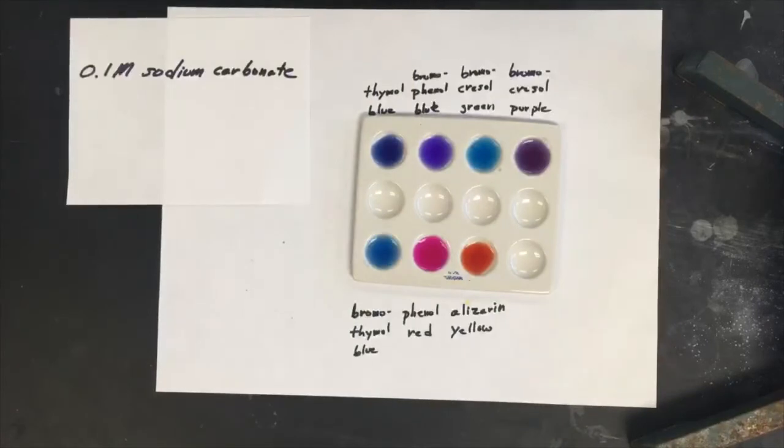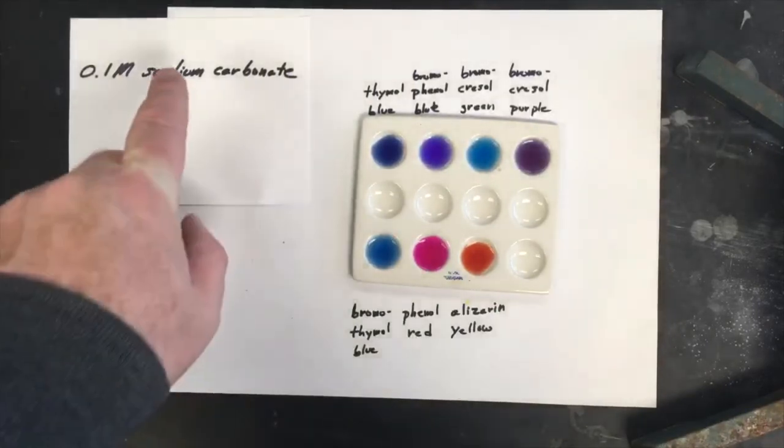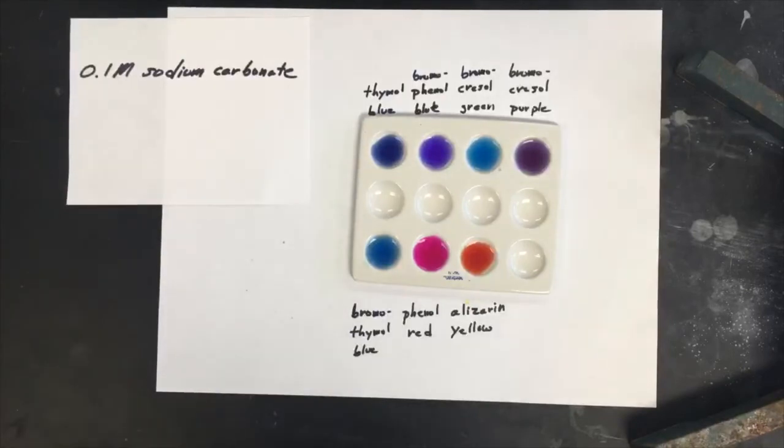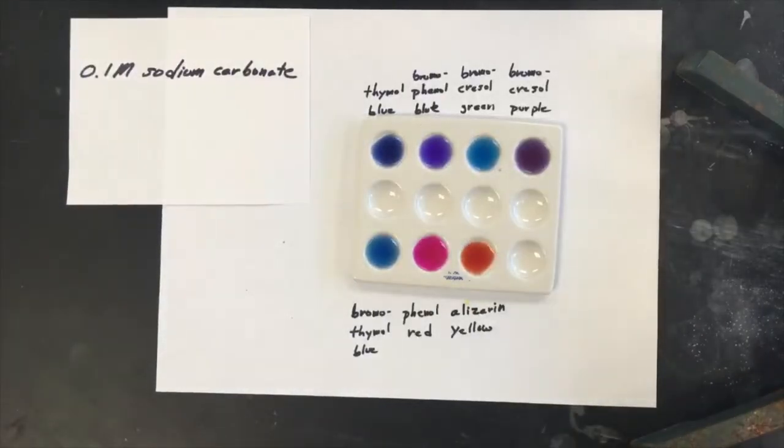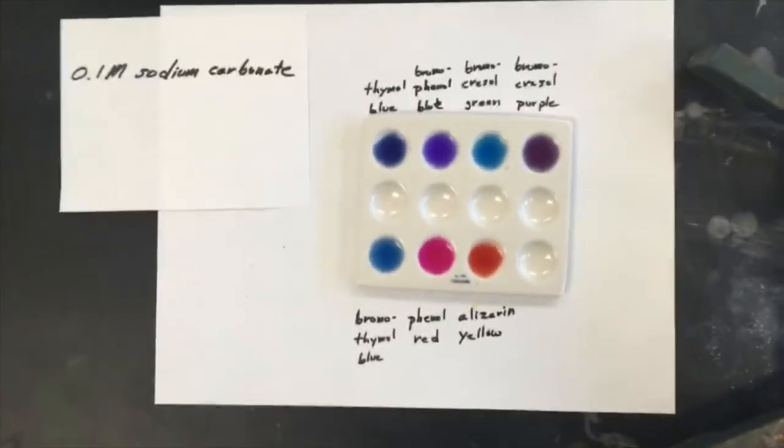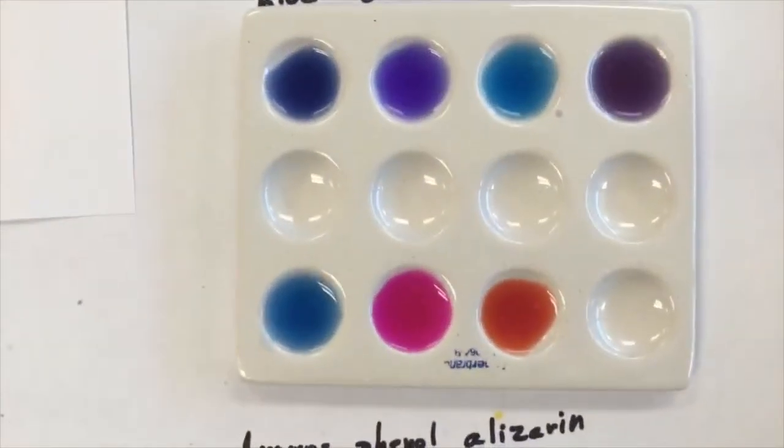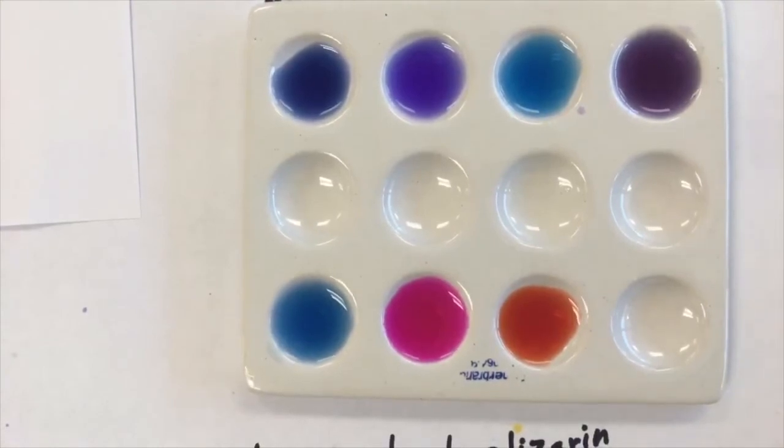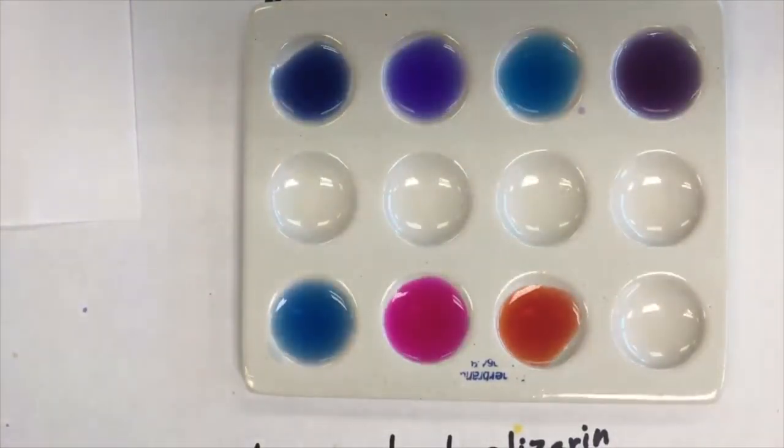So here we have the next sample. It's 0.1 molar sodium carbonate. Yeah, we definitely got some different colors now compared to earlier ones. Let me again zoom in so you can get a better picture or better idea. Try to be descriptive. You know, we got blues and purples here and try to describe them as detailed as possible. It's good to make detailed observations of your experiments.